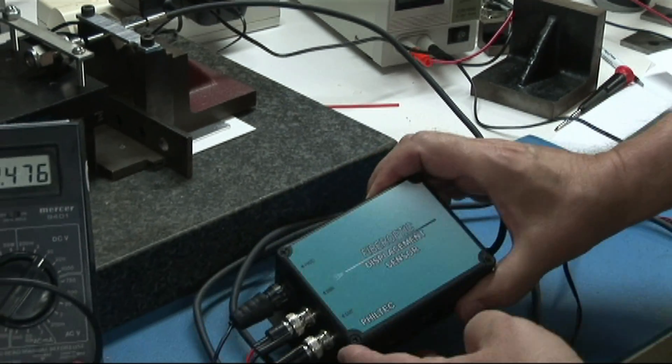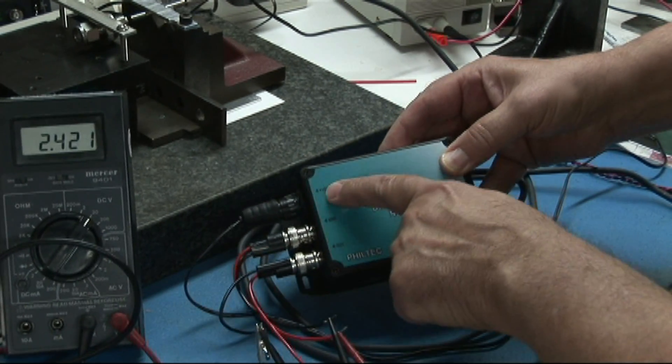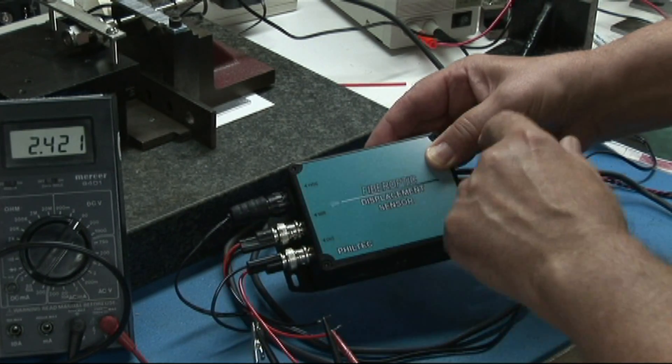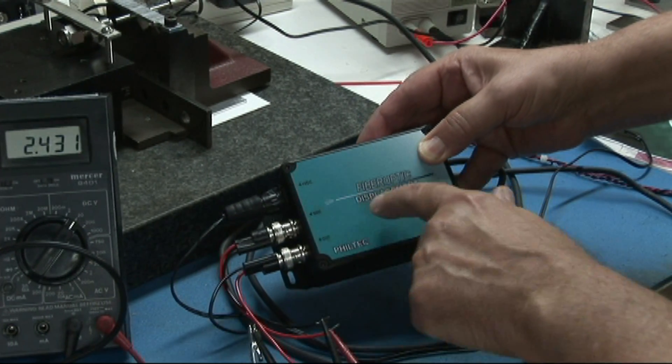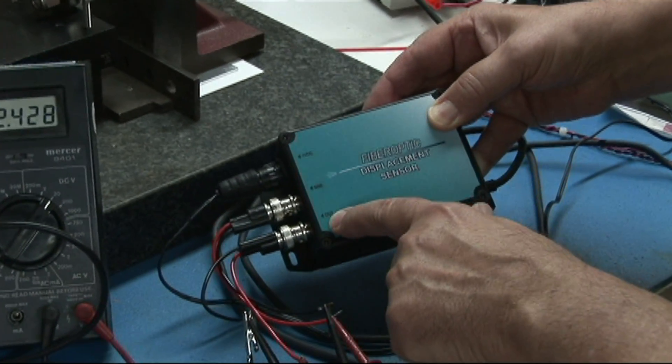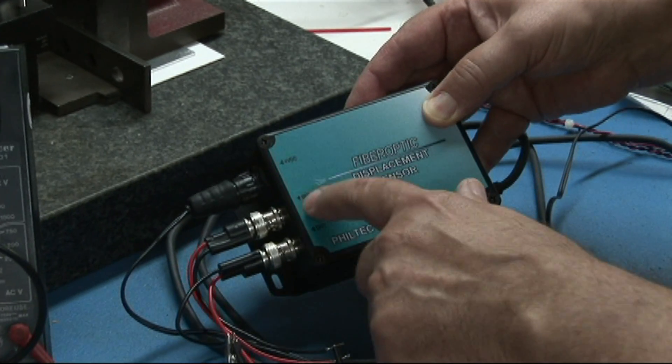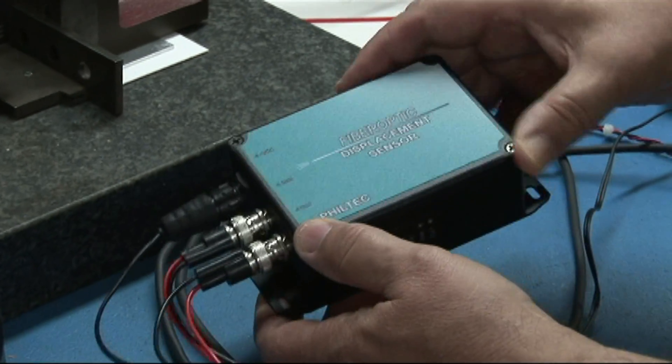Now, the sensor, as you see here, has input voltage power. We have two outputs we call SNR and OUT, which is the distance output. These are both voltage outputs that go from zero to five volts.